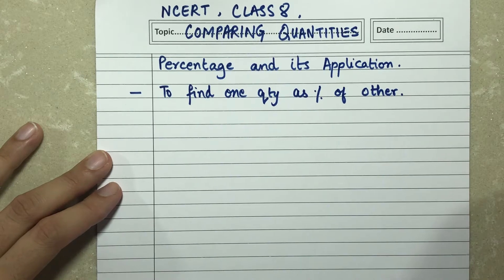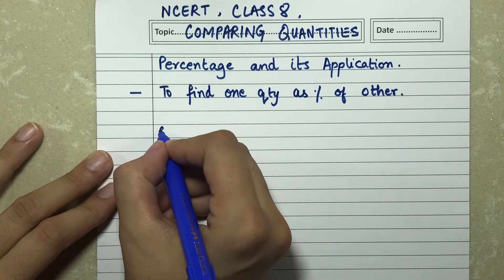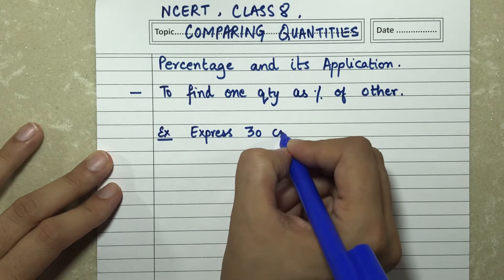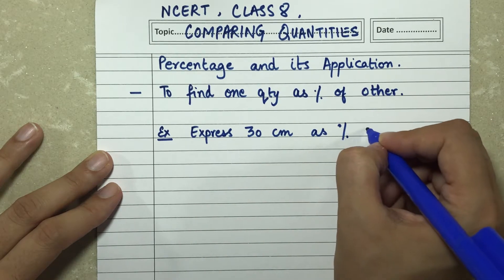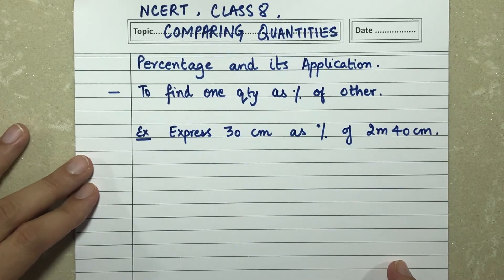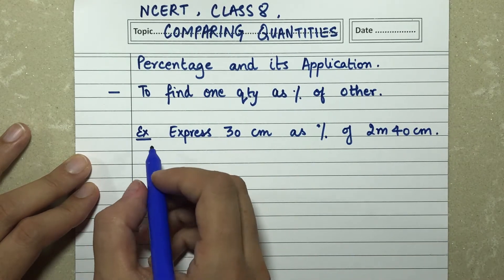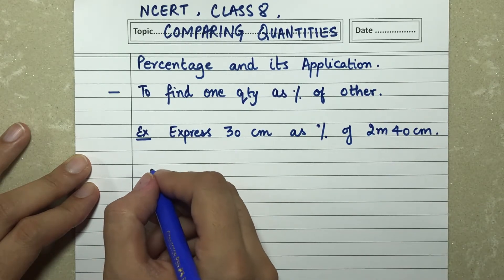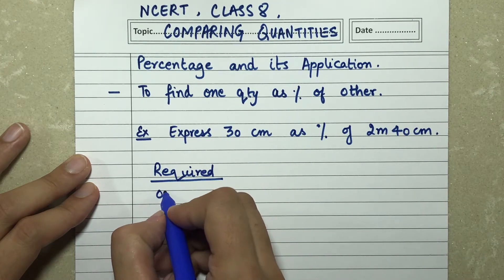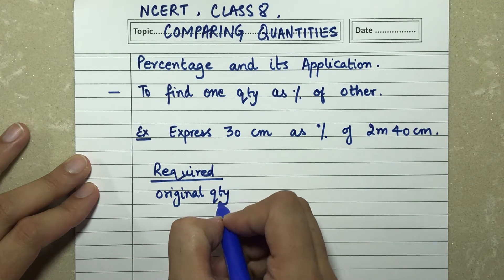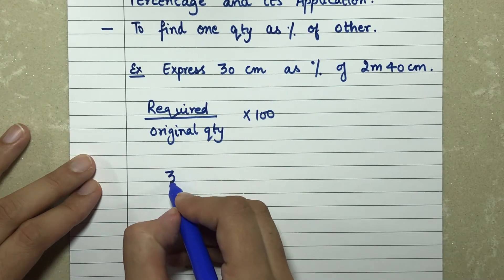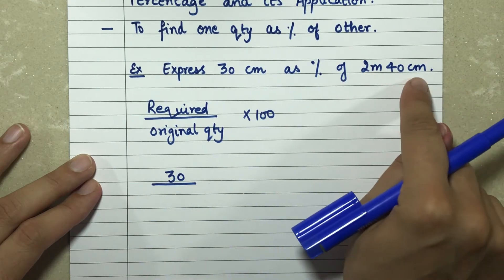For example, express 30 centimeters as a percentage of 2 meters and 40 centimeters. The formula is: required percentage = (required quantity / original quantity) × 100. My required quantity is 30 centimeters.